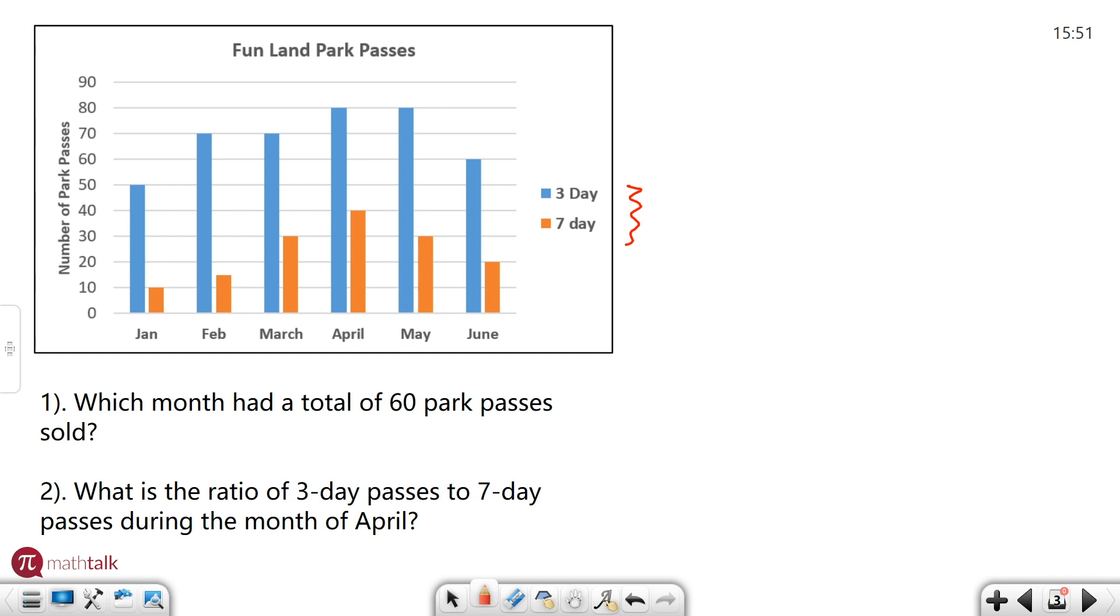Question number one says which month had a total of 60 park passes sold? On the bottom of your graph here we have the months listed. We need to find the one that has a total, that means total of three day plus seven day passes. If you look at June for example, the blue bar in June for three days is 60. It's an enticing looking answer, but you also have an additional, let's say 20, seven day passes. So that's actually 80 total passes, 60 plus 20, so that's not the right answer. We need to find the one that has a total of 60. If we look at January actually, January has 50 three day passes and 10 seven day passes. Well, 50 plus 10 is 60, which is great. That's the answer I want. January.